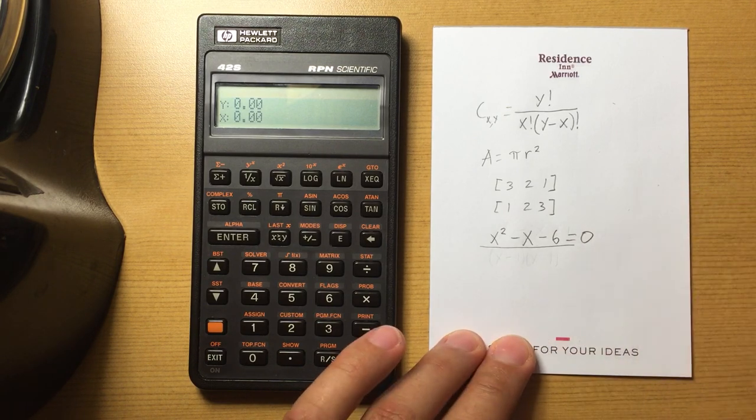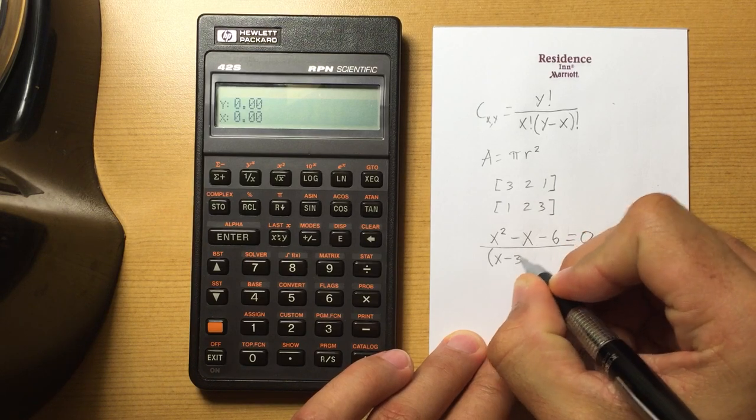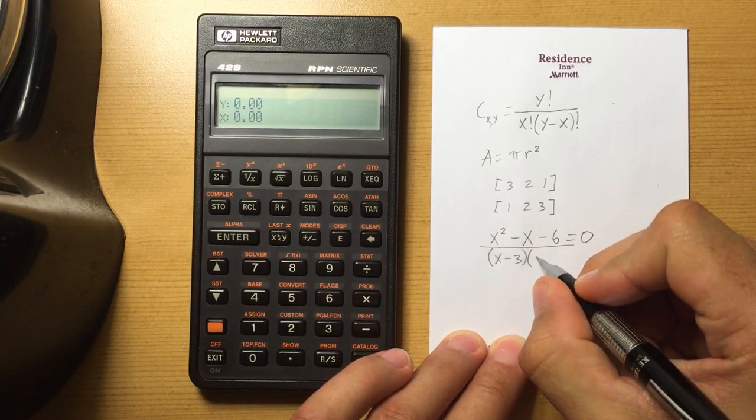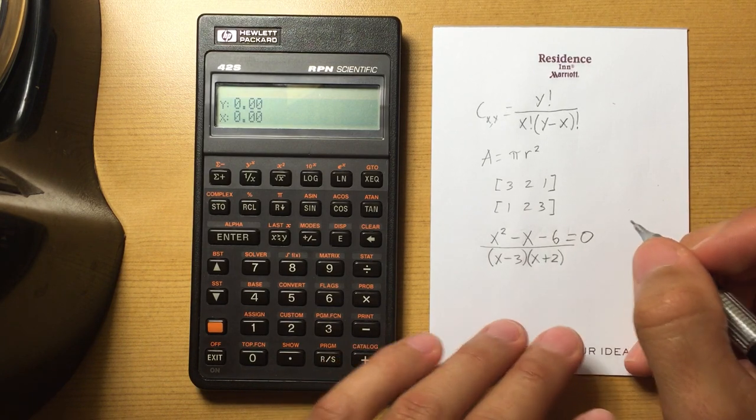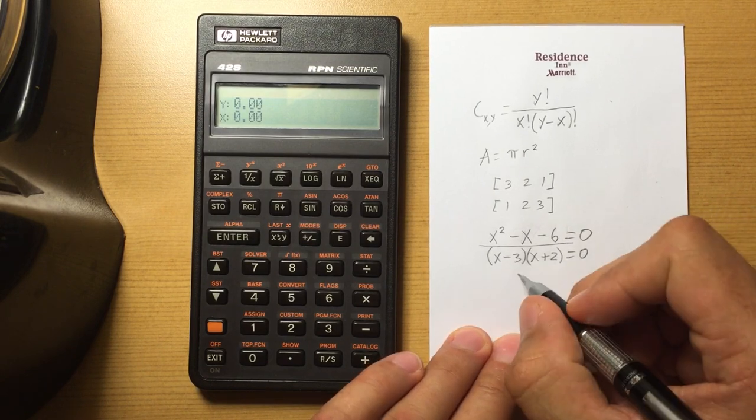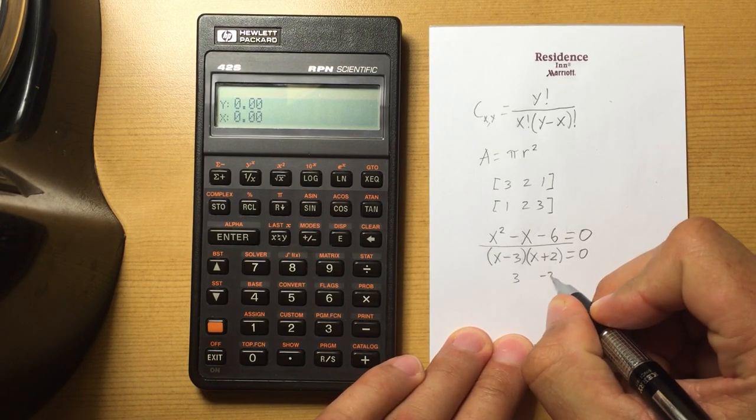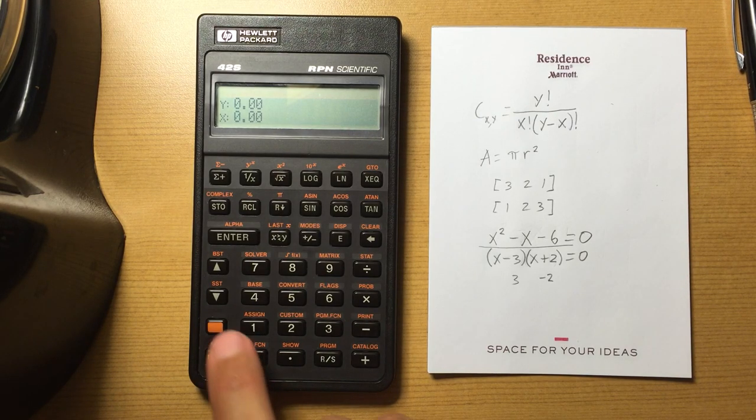But this breaks down into x minus 3 and x plus 2. So our roots are going to be 3 and negative 2. Now the way you put that into the solver is you're essentially going to start a new program.